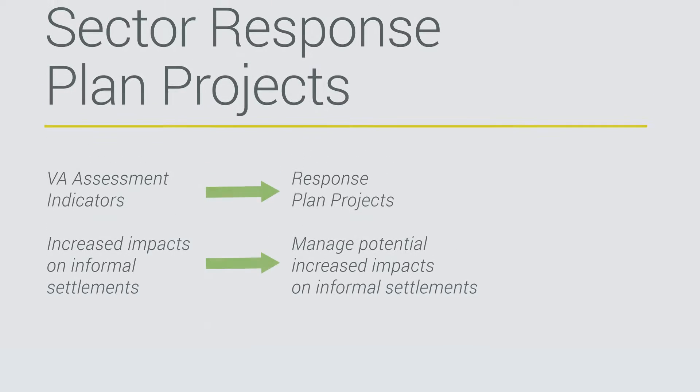The final part of the plan covers the responses and projects you've identified to address your priority climate change indicators. In this section, it's important to make a direct link between the priority climate change indicators and the projects that you're proposing. This can be done by developing project names that talk directly to your indicators.